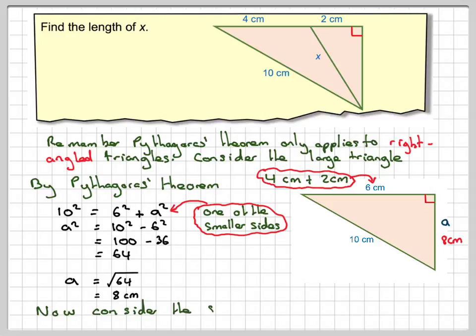And now what we're going to do is we're going to consider the smaller triangle. So the smaller triangle is this one here. It's highlighting it there. Okay, and we know that this length here is 8 centimeters, so now we can apply Pythagoras' theorem to this triangle here.